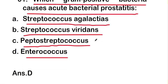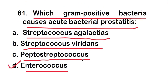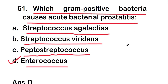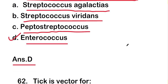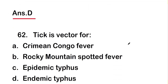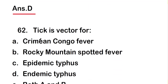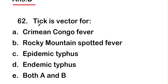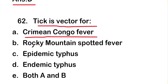The right answer is option D, that is Enterococcus. Enterococcus, which is a gram-positive bacteria, causes acute bacterial prostatitis.